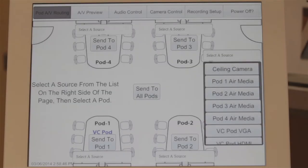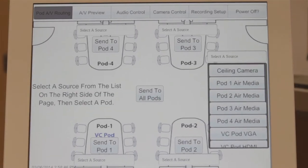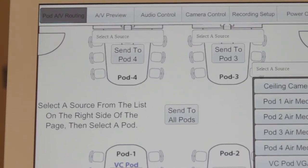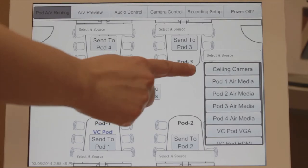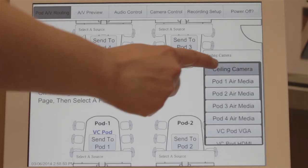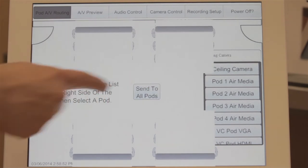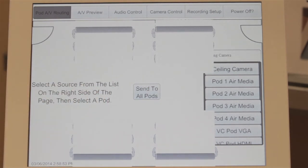To share the camera images with the class, return to the main screen by clicking the Pod AV Routing button at the top of the screen. Select Ceiling Camera from the list on the panel, then select the pods where you would like to display the images.